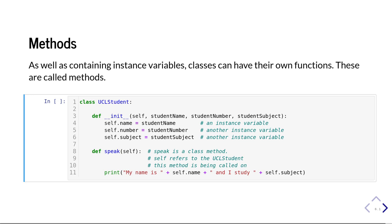Let's add a class method to our UCL student class. The same definition from before runs through line six, and then on line eight we create a class method called 'speak'. That's a special kind of function which can be called on one of our UCL student objects. What 'speak' does is print out a message appropriate to the student — printing self.name and self.subject, i.e., the instance variables holding the student's name and subject.